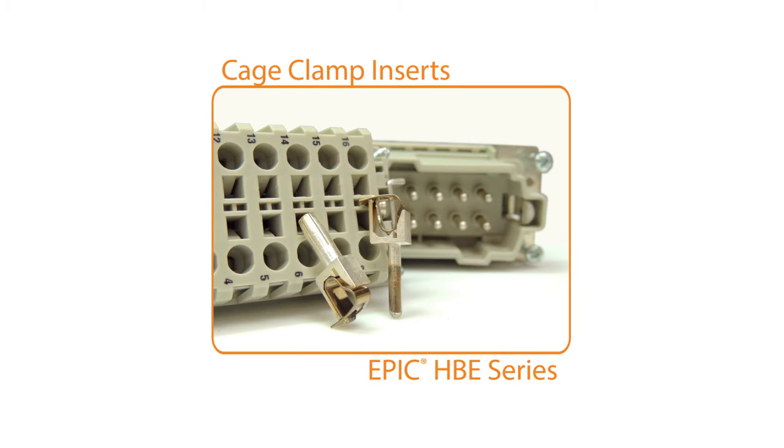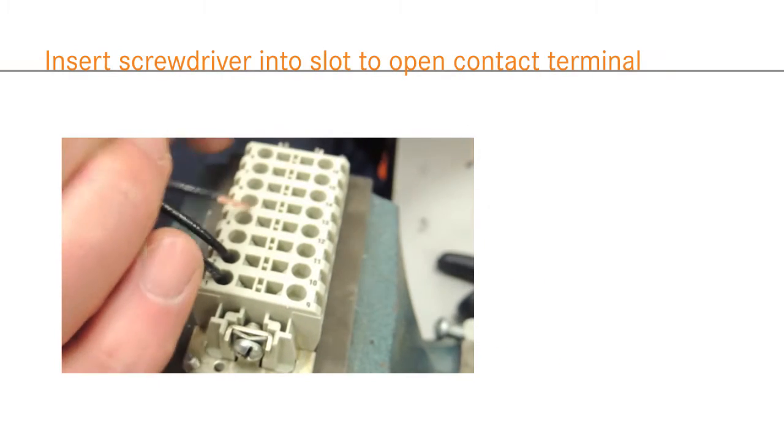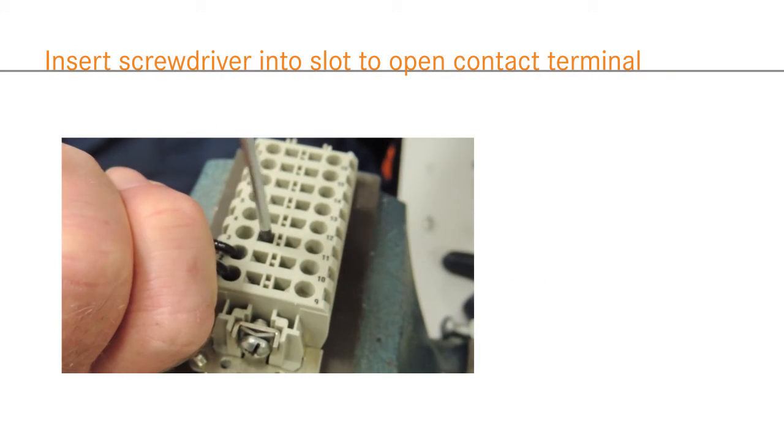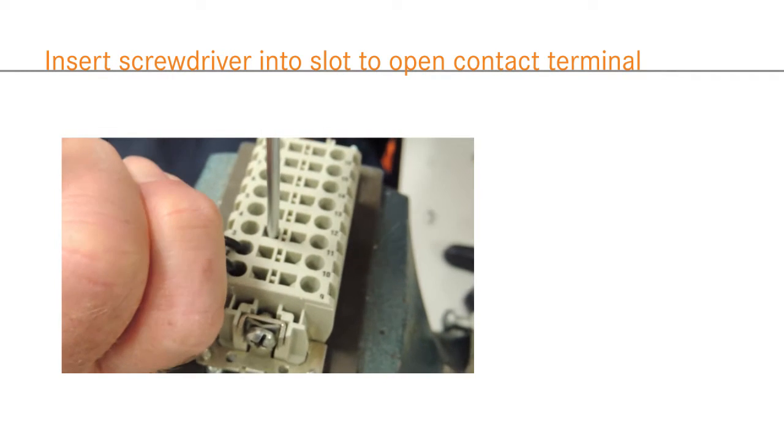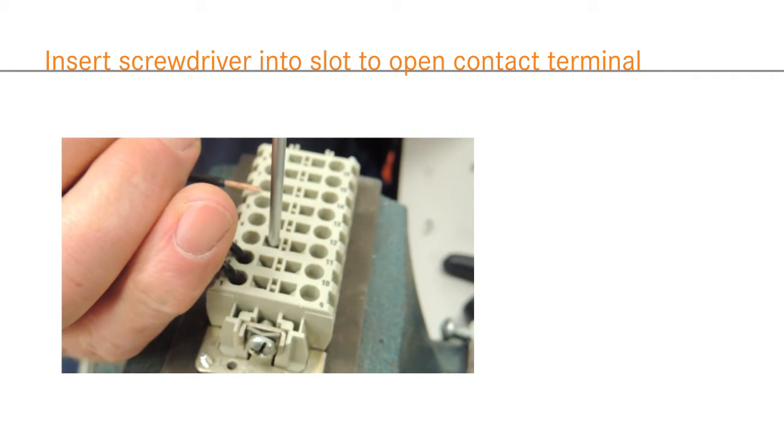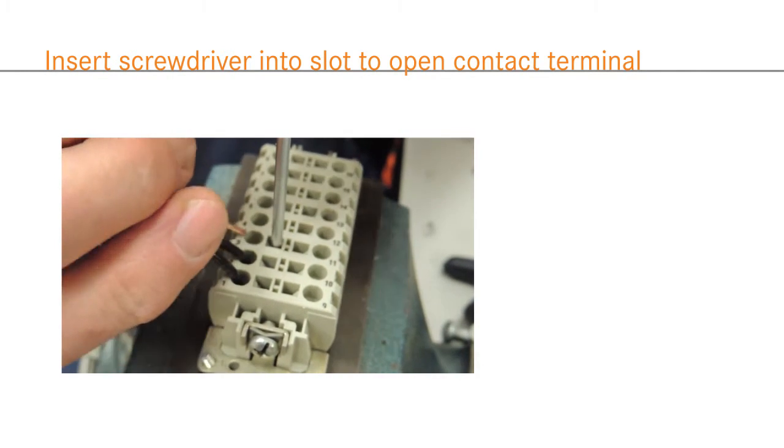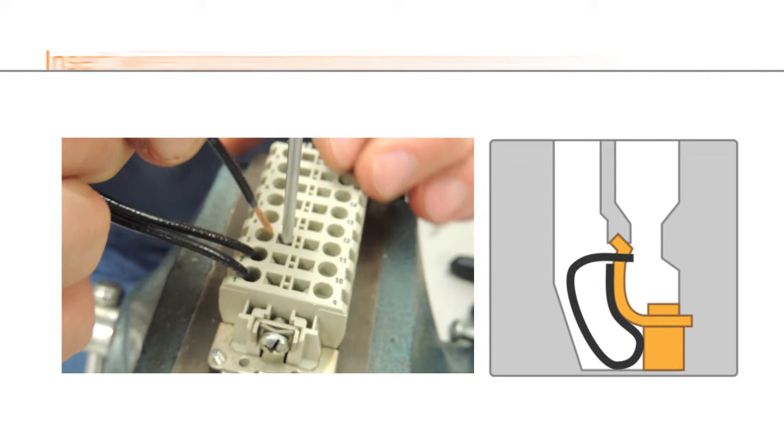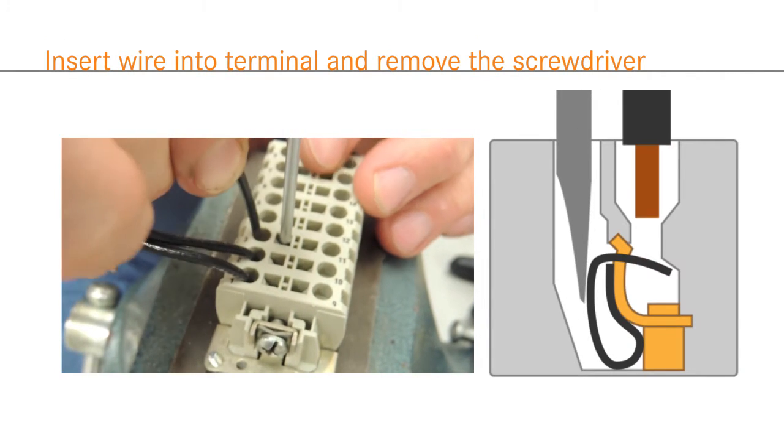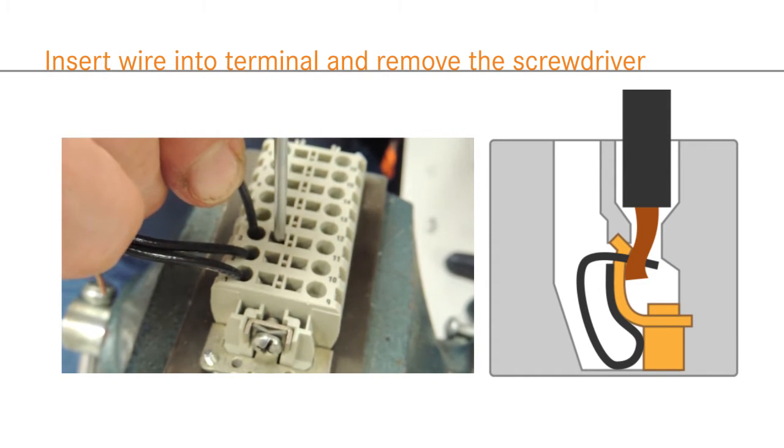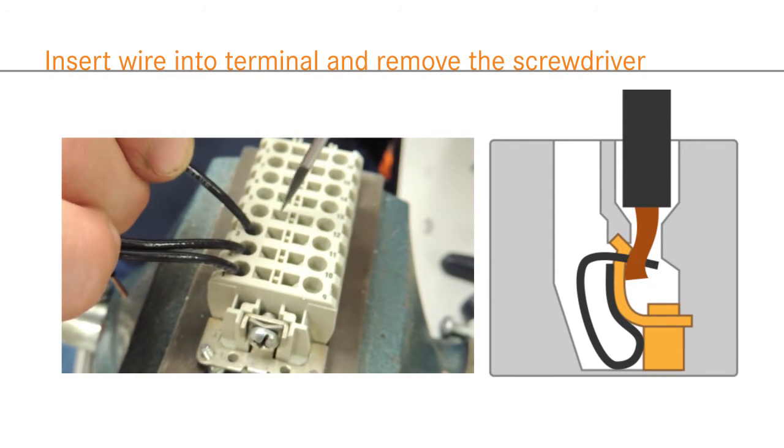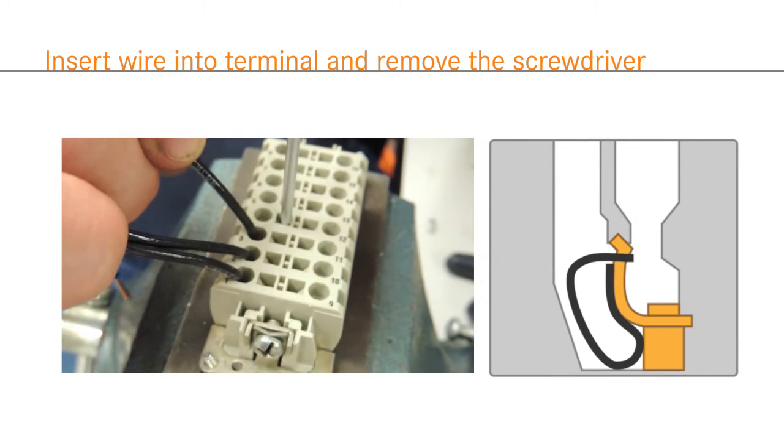Cage clamp inserts offer vibration resistance, but conductors can be removed, unlike a permanent crimp termination. To wire a cage clamp insert, first use a thin screwdriver to open the internal clamp mechanism. Insert the screwdriver at an angle and then straighten it to open the clamp, as shown here. Then, place the stripped wire into the terminal and remove the screwdriver to clamp everything in place.